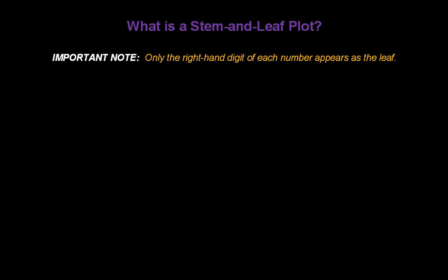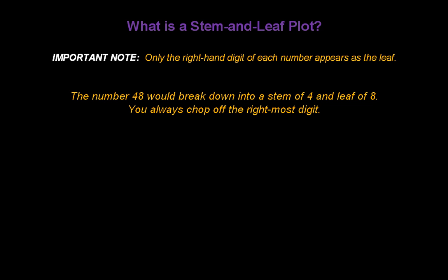Here's an important note: only the right-hand digit of each number appears as a leaf. So the number 48 would break down into a stem of 4 and a leaf of 8. You always chop off the right-most digit.